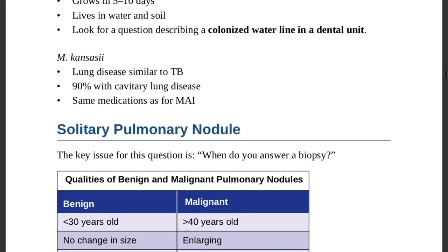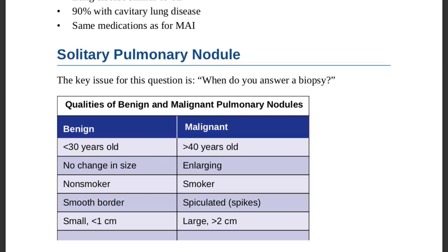Now a very important topic: the solitary pulmonary nodule. The key issue is when to perform a biopsy. Distinguishing benign from malignant nodules: patients aged 30 or younger most likely have a benign nodule, while those over 40 tend to have malignant nodules. Malignant nodules are continuously enlarging.